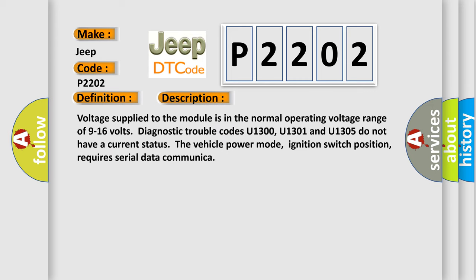Voltage supplied to the module is in the normal operating voltage range of 9 to 16 volts. Diagnostic trouble codes U1300, U1301 and U1305 do not have a current status. The vehicle power mode, ignition switch position, requires serial data communication. This diagnostic error occurs most often in these cases.